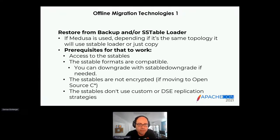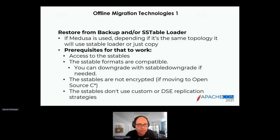If you're moving from something that supports transparent data encryption to open source Cassandra — which doesn't — you'd have to unencrypt first. DSE also has custom compaction strategies; if you use those, the destination database won't be able to read them, and you'd need to change your schema to use strategies supported by the destination. We've run into all of these issues ourselves.